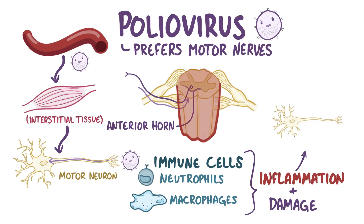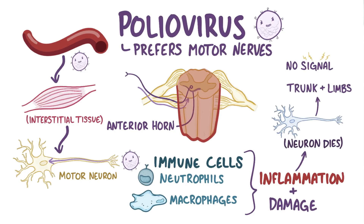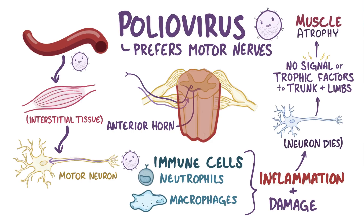As infected motor neurons die, the muscles of the trunk and limbs no longer receive signals from the brain or trophic factors, which causes the muscles to start to atrophy and become weak.